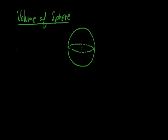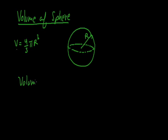The sphere of radius r, so its volume is defined as 4/3 π r³. This is the volume of a sphere. Now, what is the volume of a hollow sphere?